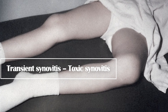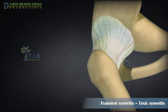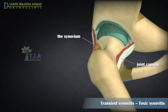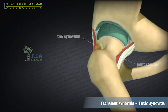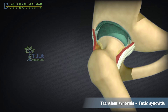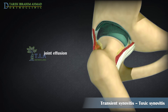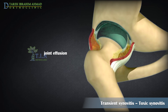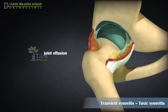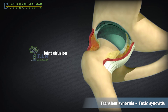Transient synovitis. The hip joint, like all joints of the body, has a lubricating lining called the synovial membrane. Transient synovitis is an idiopathic benign inflammatory process affecting the joint synovium. It can affect any major joint but most commonly affects the hip joint. When the synovial membrane is inflamed, it produces more than its usual thin film of lubricating fluid, resulting in a joint effusion, which can cause joint capsule extension and joint tightness, resulting in more pain in the hip.